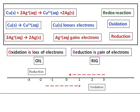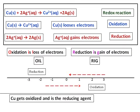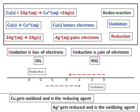The substance which gets oxidized is the reducing agent, and the substance which gets reduced is the oxidizing agent. So in this case, copper is getting oxidized, and hence copper is the reducing agent. Silver plus — looking at the reactant side — silver plus is getting reduced to silver, and hence silver plus is the oxidizing agent.